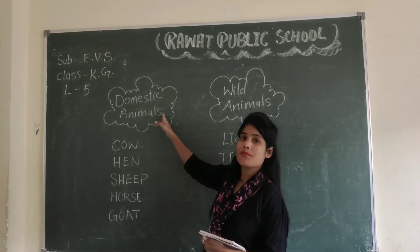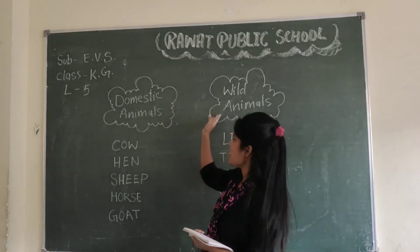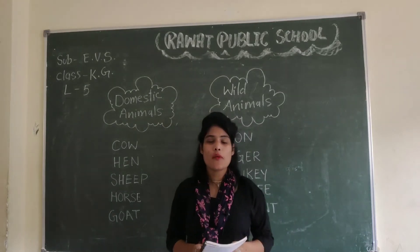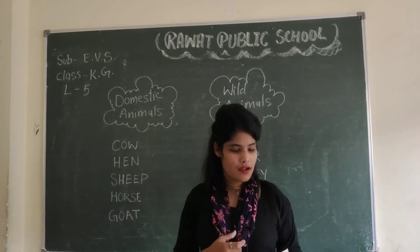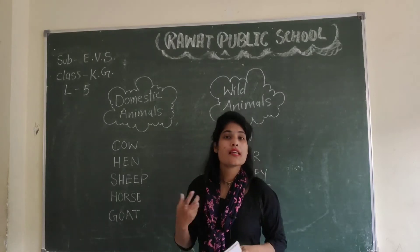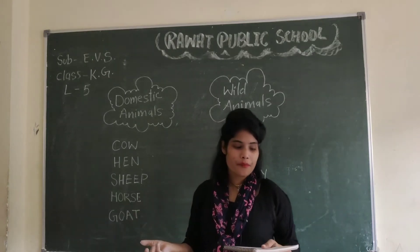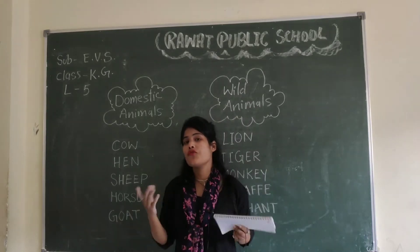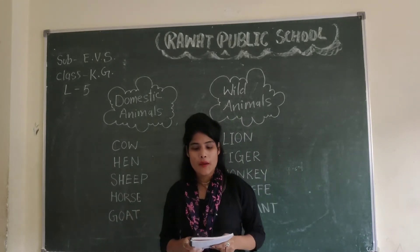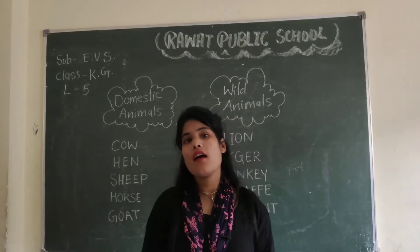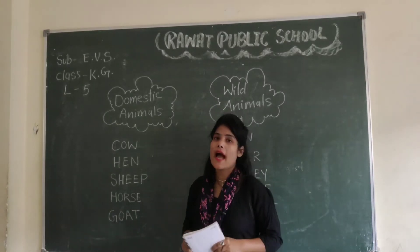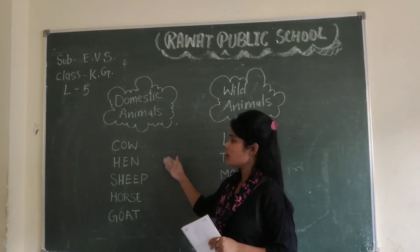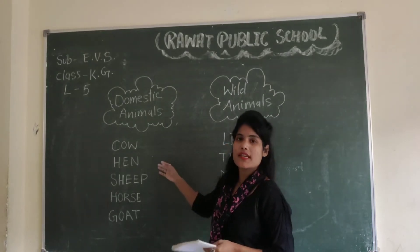Domestic animals means paltoo janabar. Wild animals means jungli janabar. Domestic animals live near us. Some animals live on a farm — in an animal home or farm.